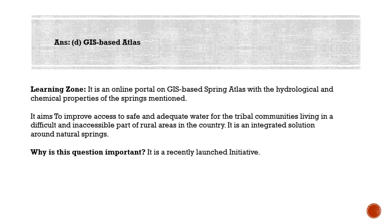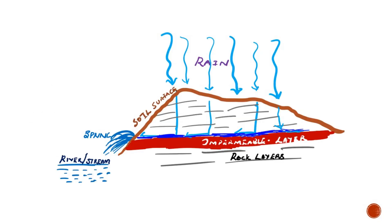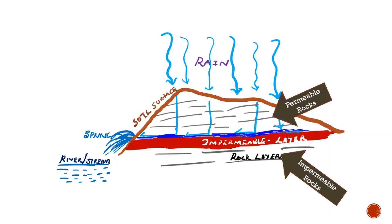Let's understand what a spring is. It is a water body formed as a result of water flowing to the earth's surface from an aquifer. The surface of the soil is covered by thin layers of soil, and underneath that various layers of rock lie. These rocks are sometimes impermeable — water cannot go through them — and at some parts they are permeable. The gray lines in the illustration are rocks.